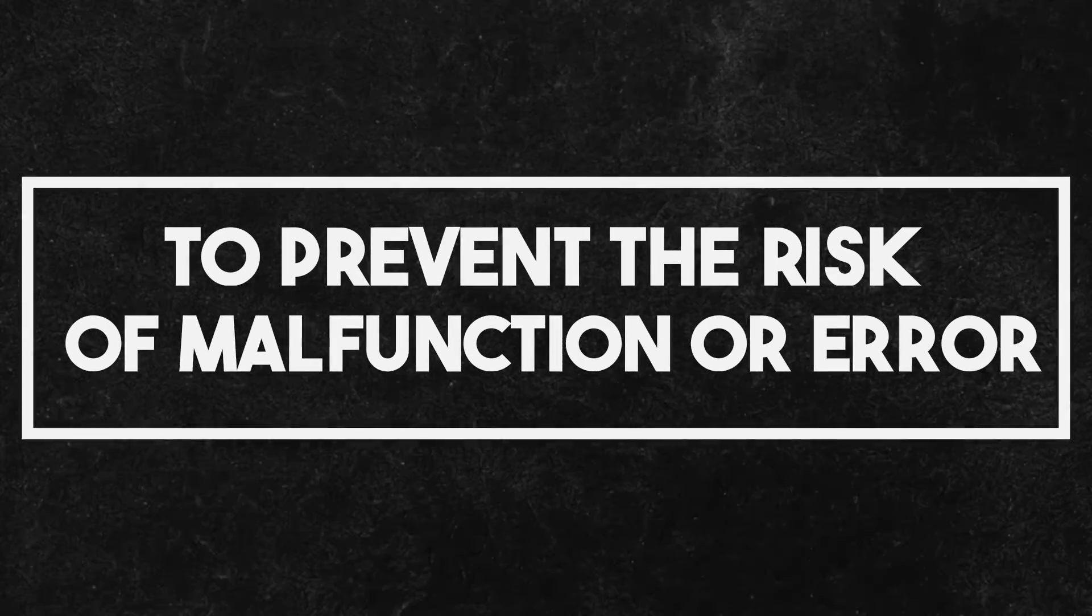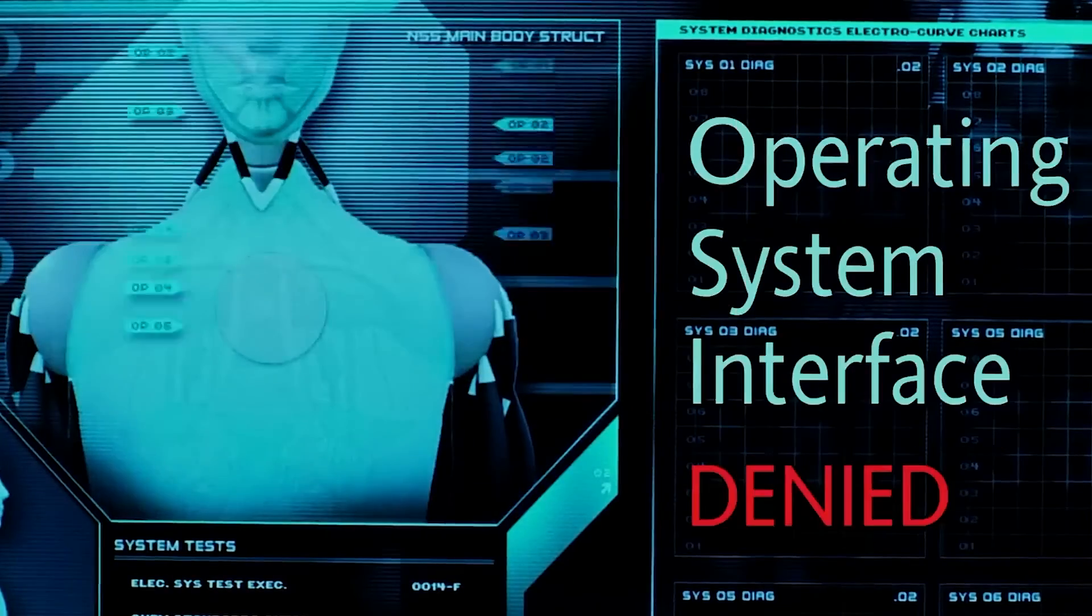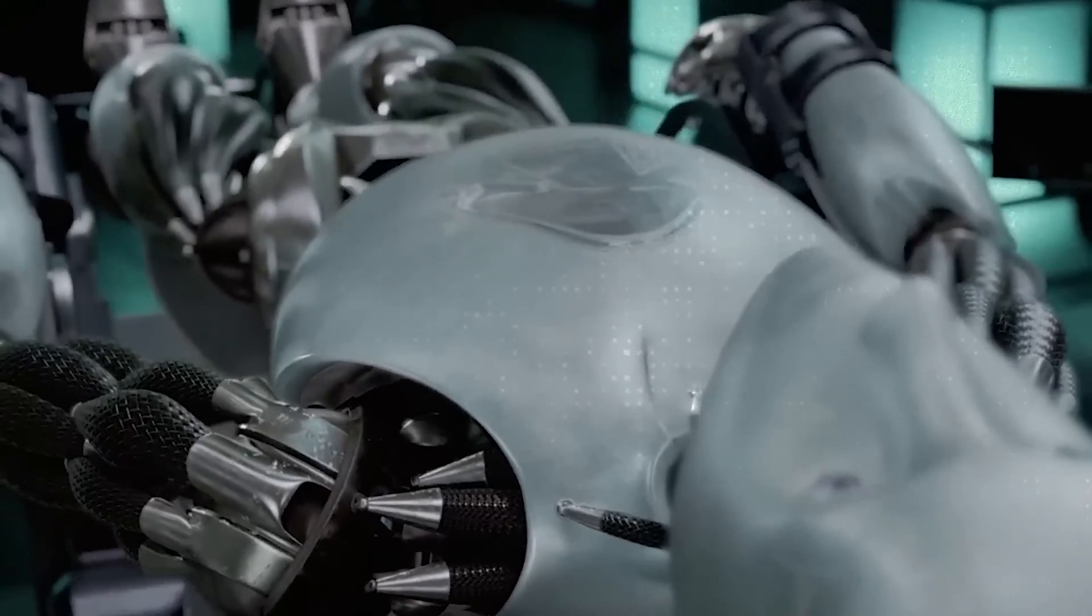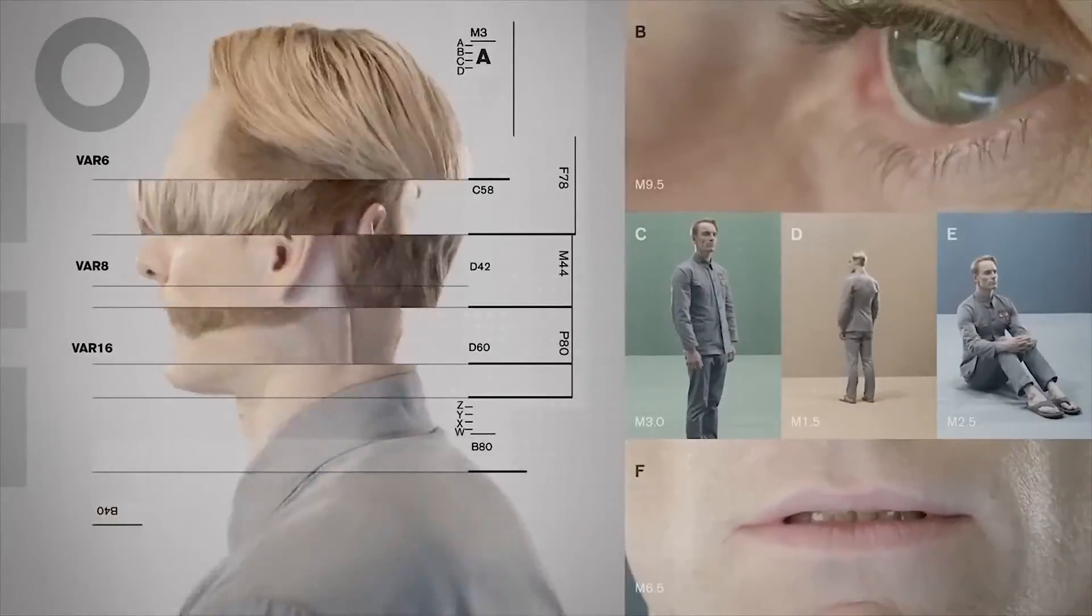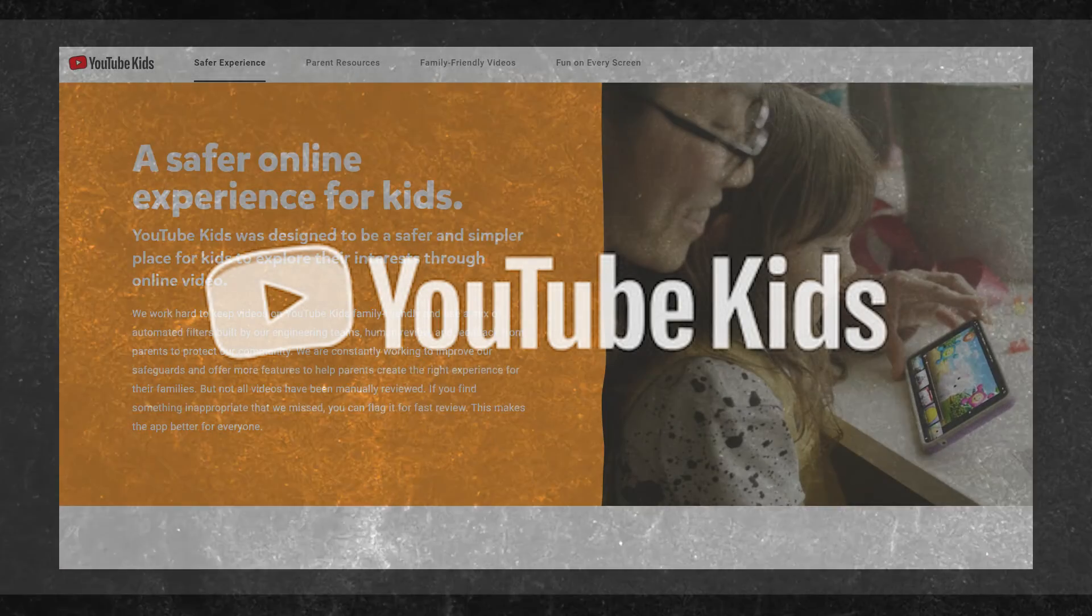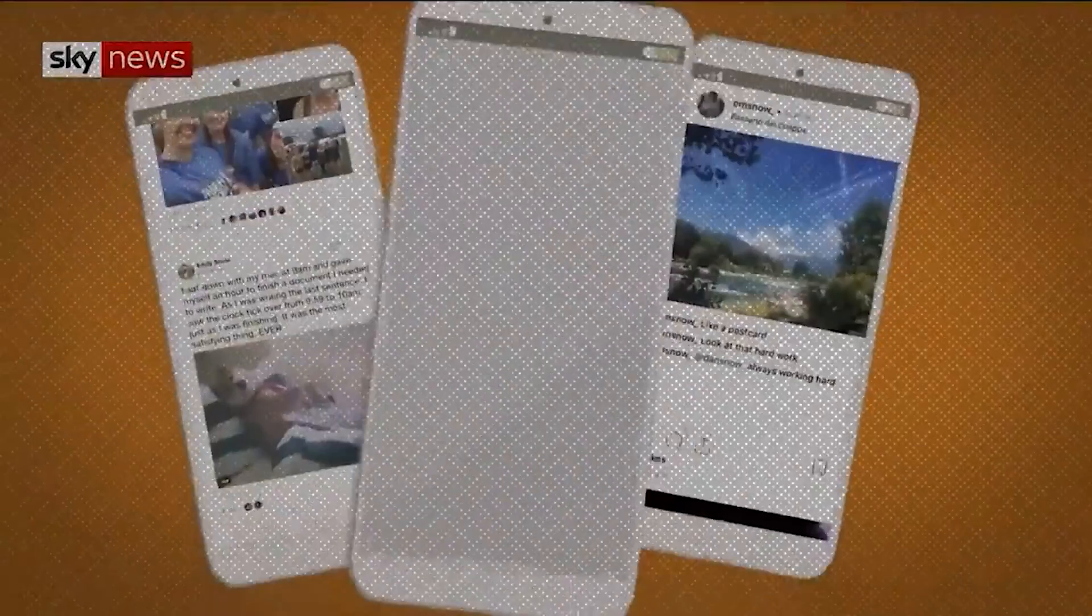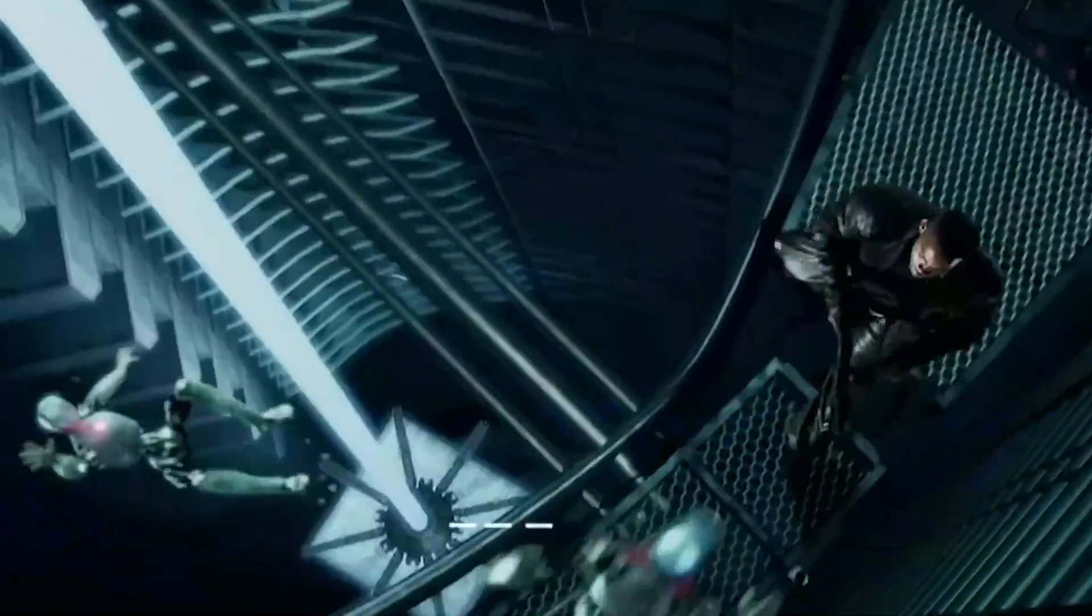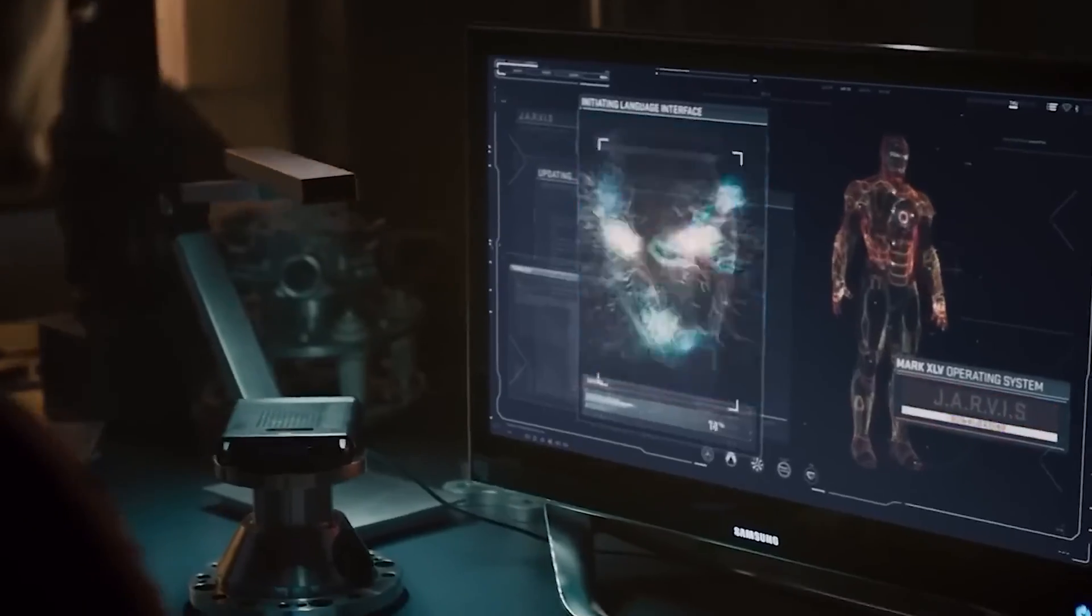To prevent the risk of malfunction or error in different sectors, AI system failures have had significant consequences, like a trading algorithm triggering a market crash, a self-driving car causing a fatal accident, and a facial recognition error leading to wrongful arrest. Instances like YouTube Kids recommending inappropriate content and a social media platform's translation feature misinterpreting benign messages resulting in arrest highlights the risk. These examples underline the critical need for kill switches in AI systems.